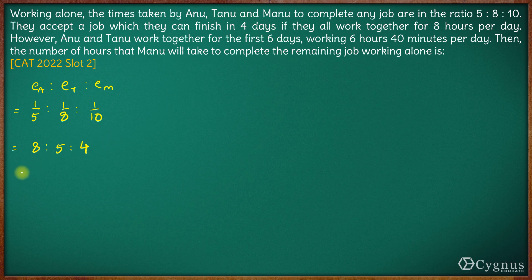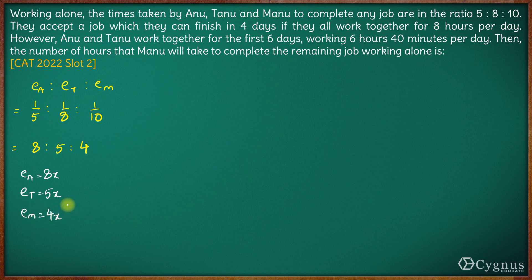From here we can say that the efficiency of Anu is 8x, efficiency of Tanu is 5x, and efficiency of Manu is 4x. These will be their efficiencies.